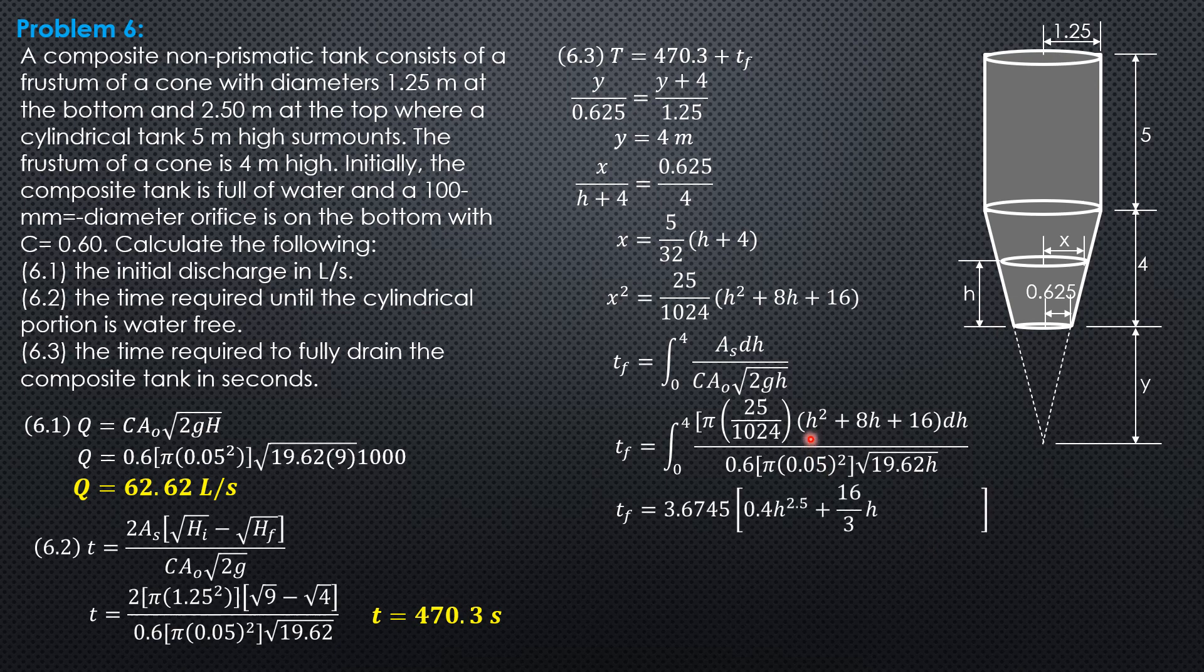Then the integral of h²/√h: integral of h^(3/2) is h^(5/2) over 5/2, and reciprocal of 5/2 is 2/5 or 0.4. So 0.4h^2.5. Then integral of 8h/√h: 8h^(1/2) integrates to 8h^(3/2) over 3/2. So 8/(3/2) is 16/3, h^(3/2) or h^1.5.